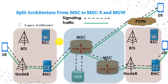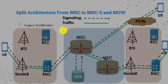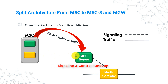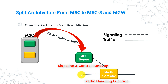Let's see what happens in the split architecture. The MSC is divided into two nodes: the first is called MSC Server, and the second is called Media Gateway. The signaling function now goes to the MSC Server, while the traffic handling function goes to the Media Gateway. This is the actual meaning of the split architecture — splitting the MSC functions into two nodes: the MSC Server for signaling, and the MGW for traffic handling.